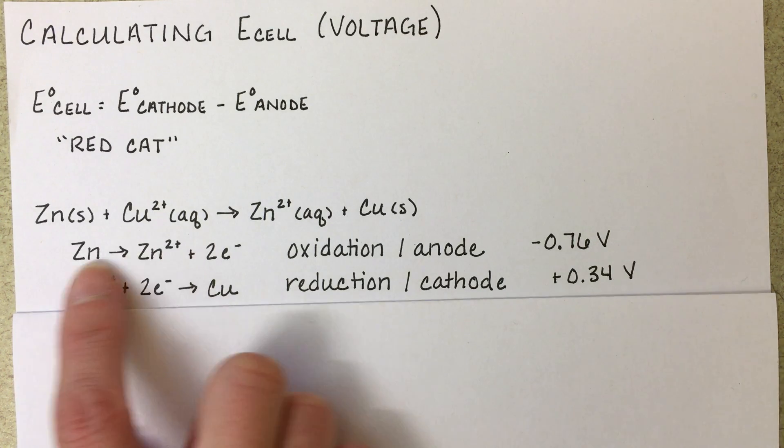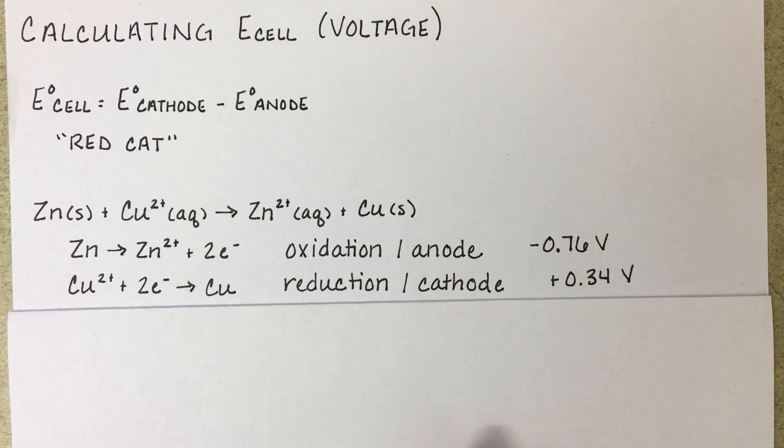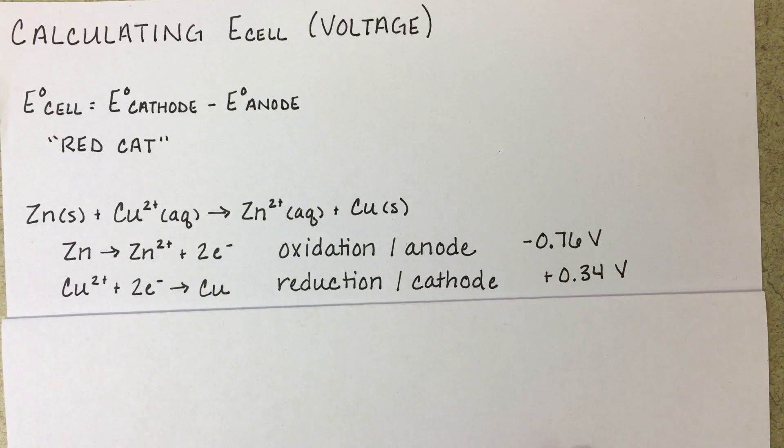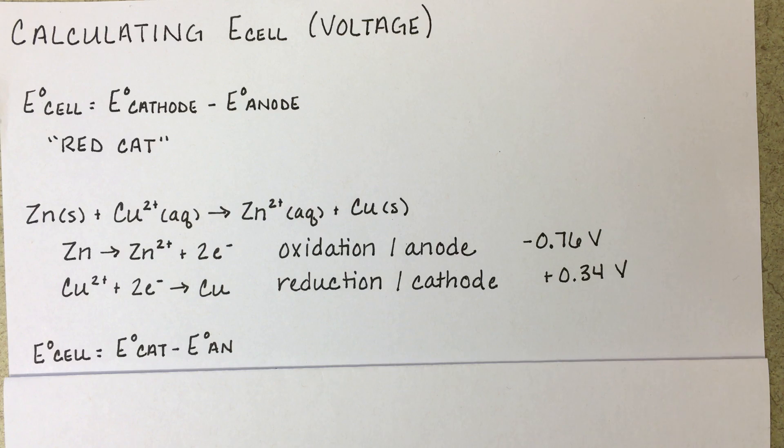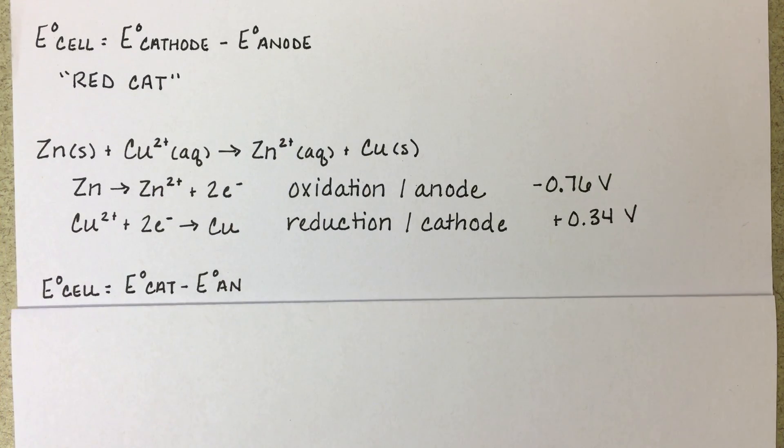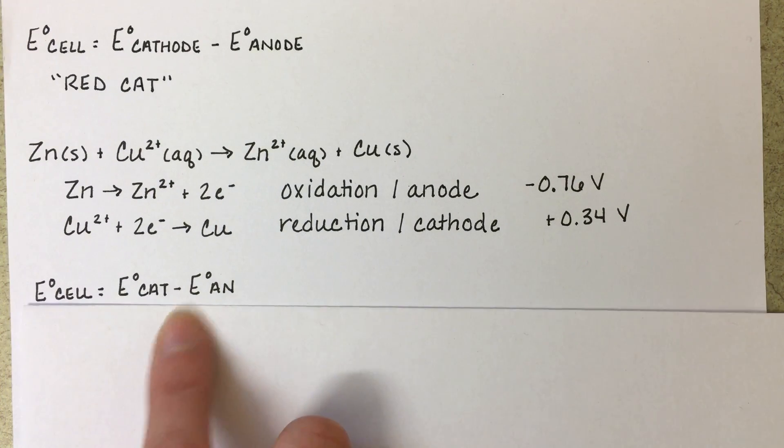Again, make sure that you're choosing the right reaction. Look carefully. Once we have these values identified, we're just going to plug them into the equation. E-cell equals E-cat minus E-AN.